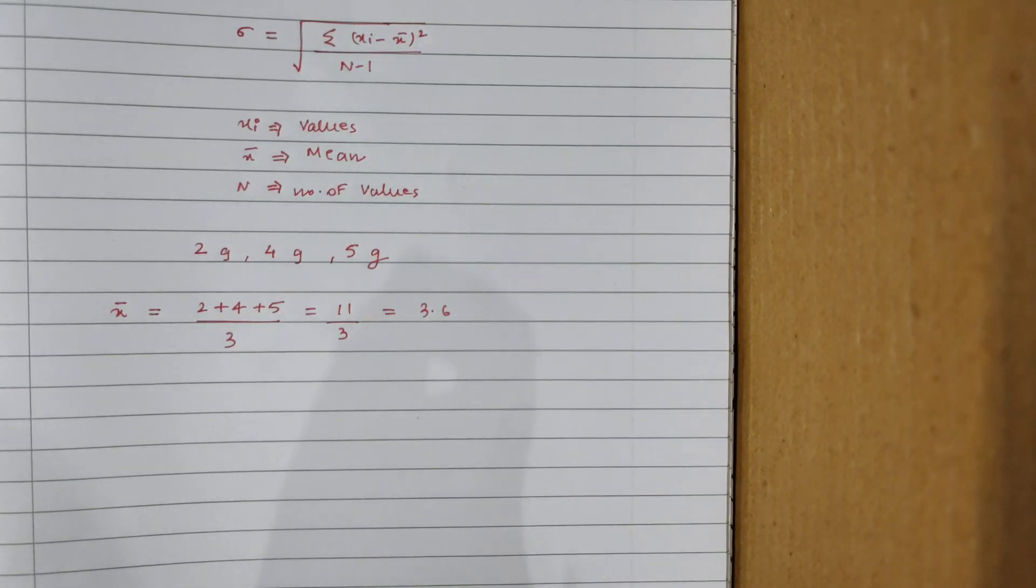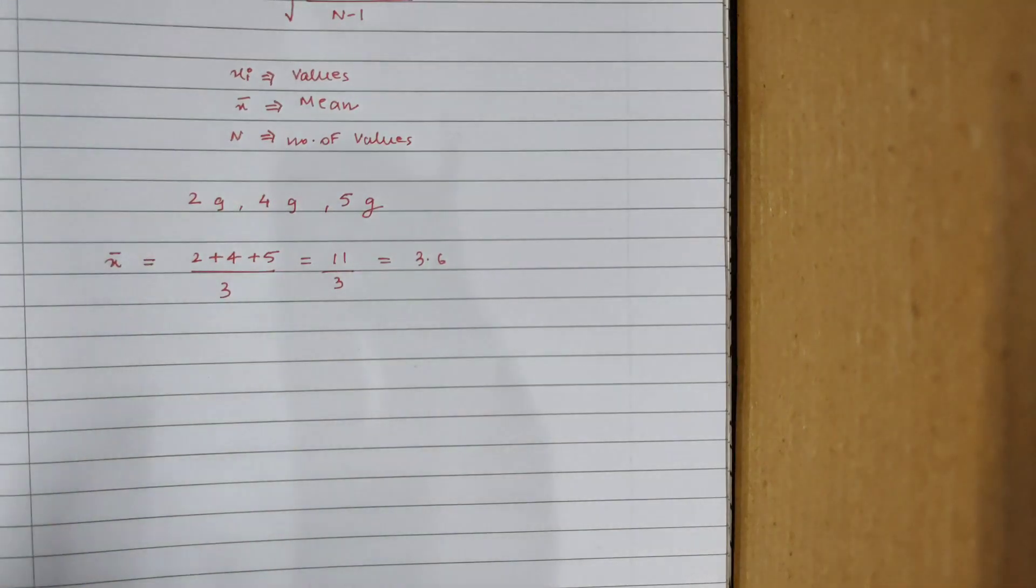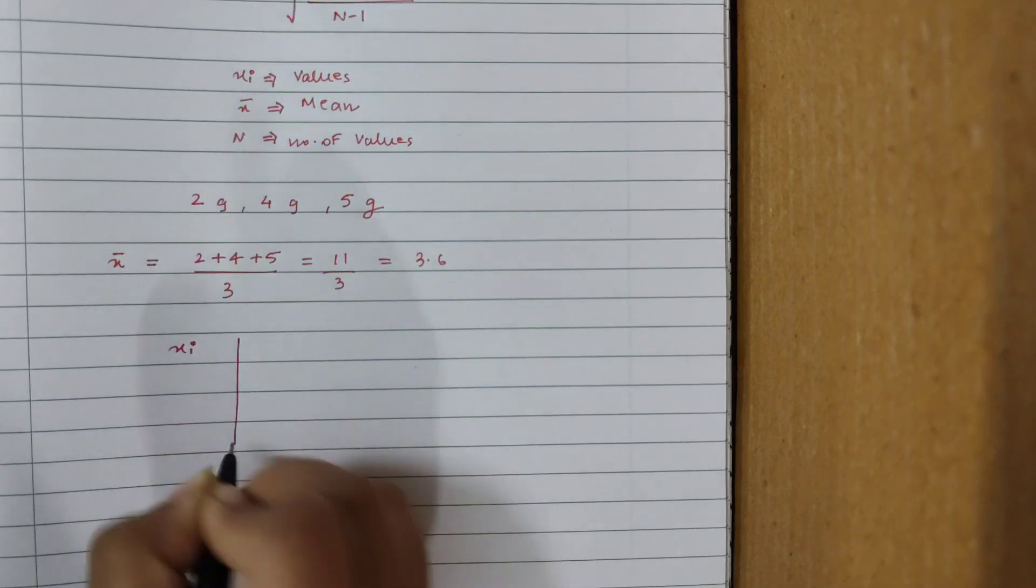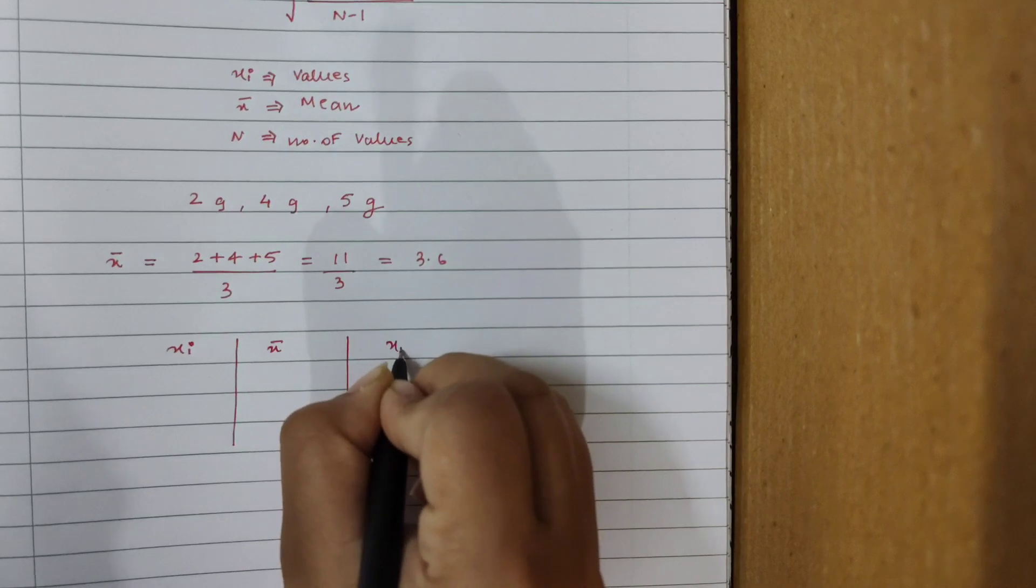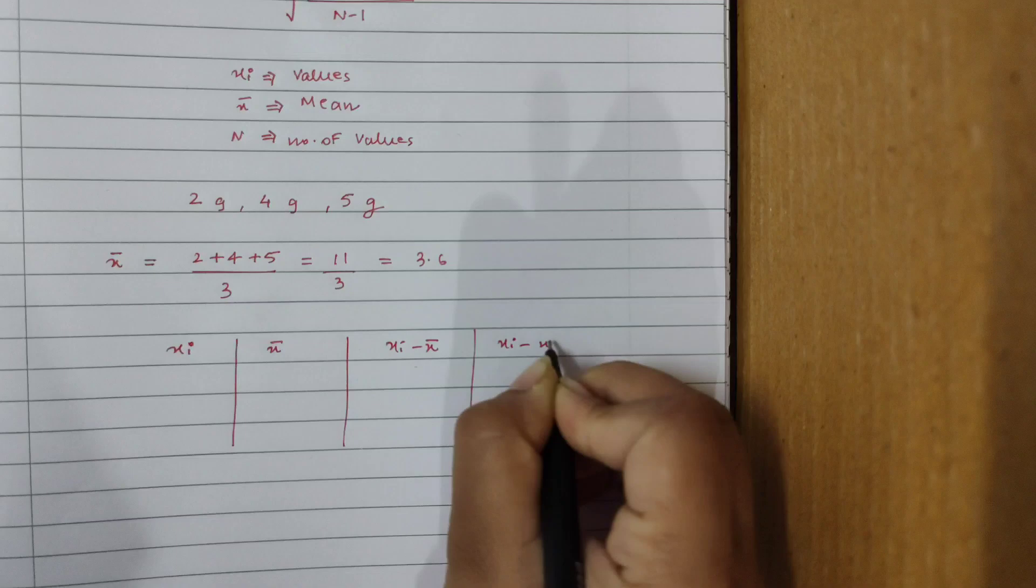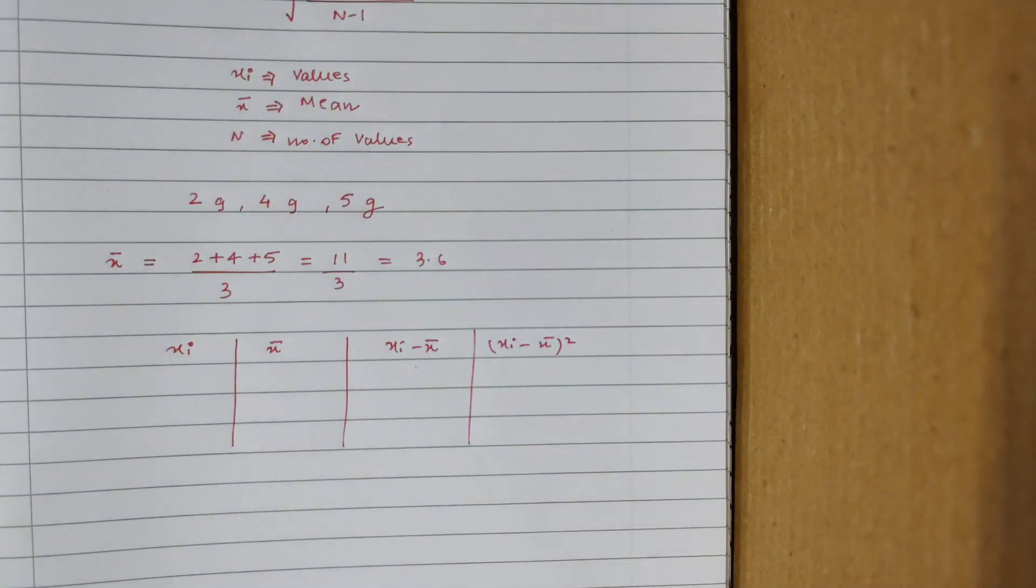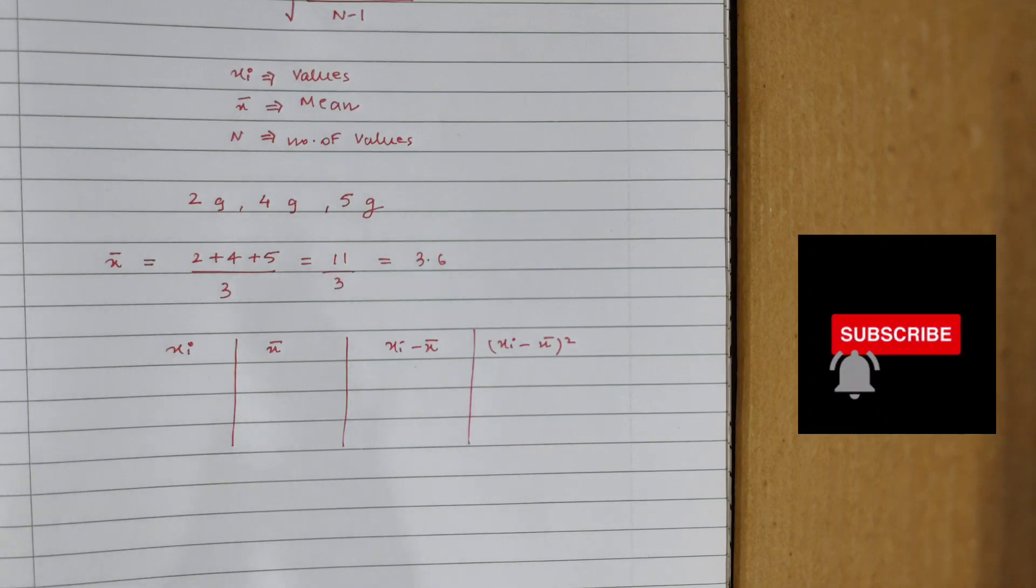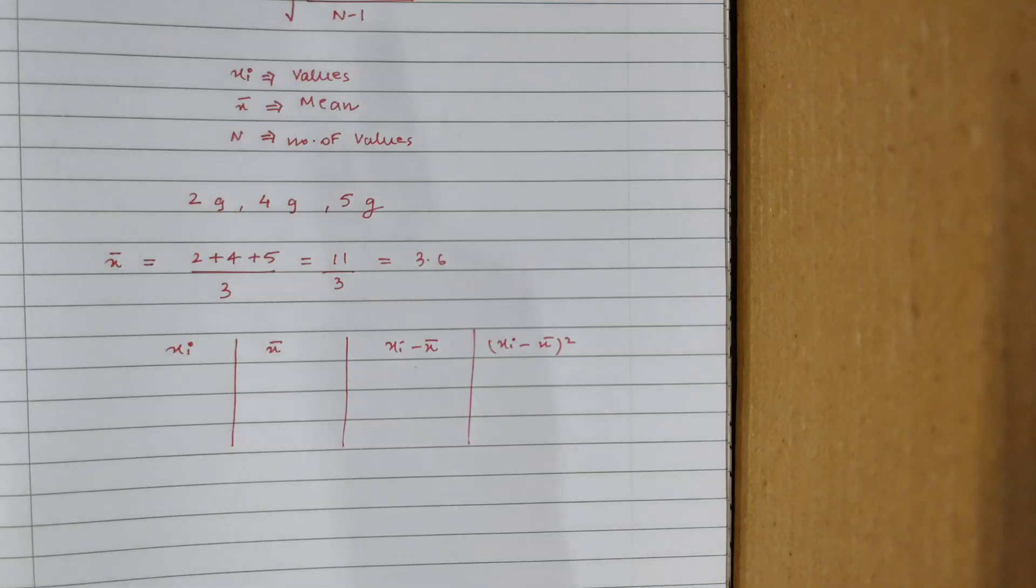Next, what I do is I do not jump to the formula directly because I know that I mess it up. Instead of directly going to the formula, I make a small table, a very simple table, very quickly. So what I do is I write xi, I write x bar, I write xi minus x bar, and last, what do I write? Obviously, (xi minus x bar) squared. This simple method of using a table has sorted out all the problems of standard deviations for me, because this way my brain can interpret it better.